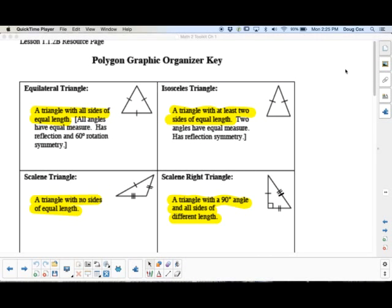This is going to be the first toolkit of the year here in our Math 2 integrated course for CPM. You should have gotten this from your teacher. It's a blank polygon graphic organizer key. And what I'm going to have you do right now is you're actually going to fill this in. If you need to stop the video at any point to slow down a little bit, I'm going to go a little fast, and you can just pause when needed.